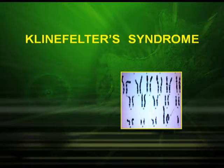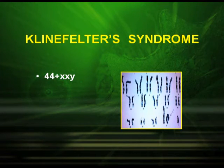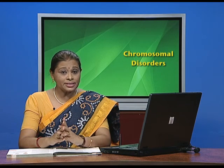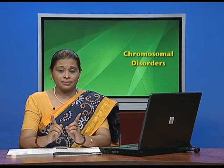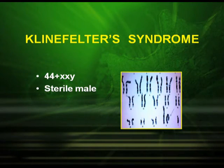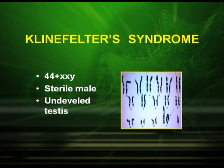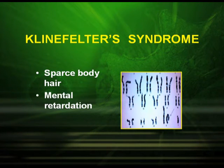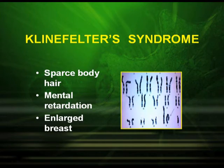Another important chromosomal disorder is Klinefelter syndrome, which generally appears in males. Here the genetic makeup is 44 + XXY, meaning one extra X chromosome is present. This kind of male is a sterile male. They have undeveloped testis, long limbs, sparse body hair, mental retardation, and enlarged breasts.